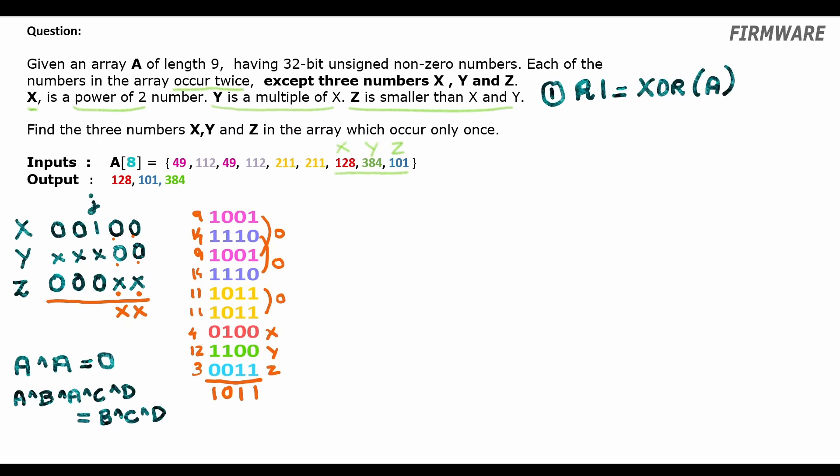So, here, in result one, the rightmost set bit of result one is in the position of the rightmost set bit in Z. And in that position, X and Y will always have zero bit. So, we can differentiate Z from X and Y using this idea. Therefore, step two: we will find the rightmost set bit in the XOR result.